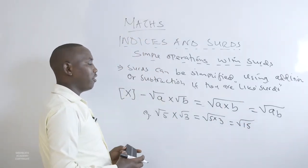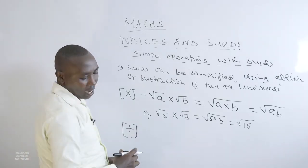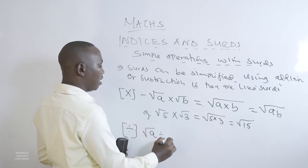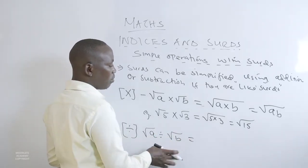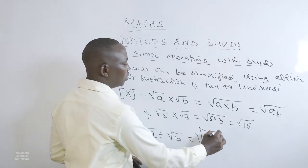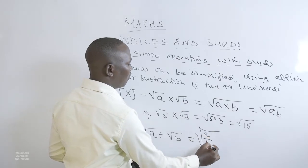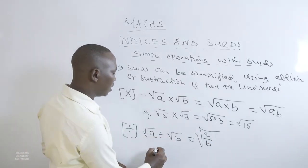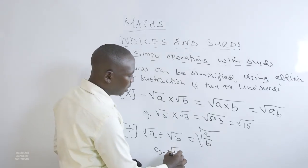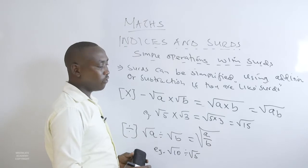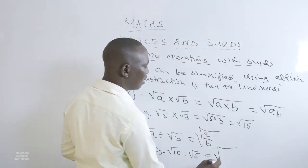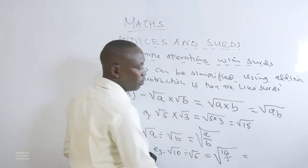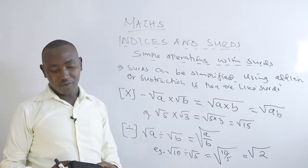For multiplication of surds: root a multiplied by root b — we combine them under one radical sign to get root of ab. For example, root of 5 multiplied by root of 3 equals root of 15. For division: root a divided by root b equals the root of a over b. For example, root of 10 divided by root of 5 equals root of 10 over 5, which is root of 2.